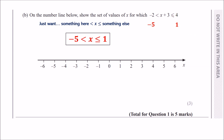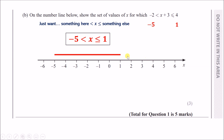To plot this on a number line, draw a straight line from minus 5 to 1. Now be careful — you've got a less than and a less than or equal sign. You draw two circles: the one that's equal to is shaded in, meaning you include it, and the one you don't shade in, you don't include. So it just misses minus 5, but 1 is included.